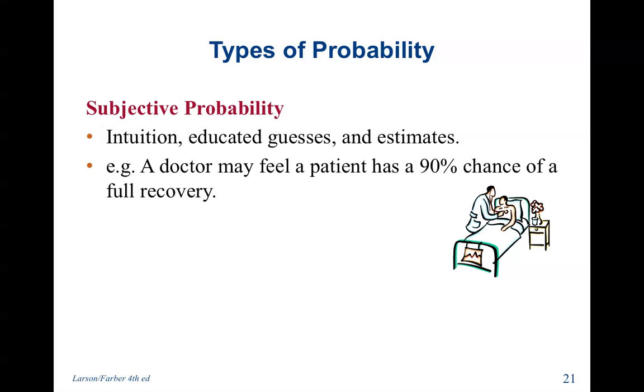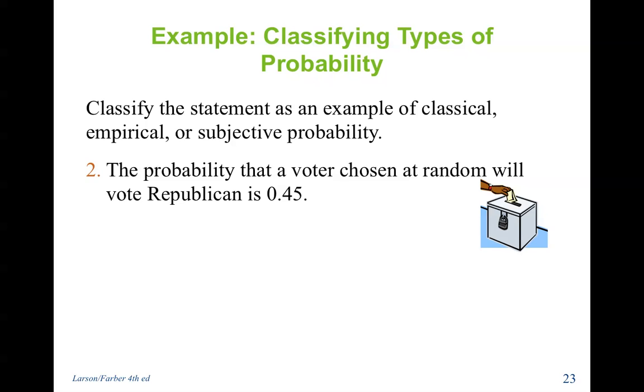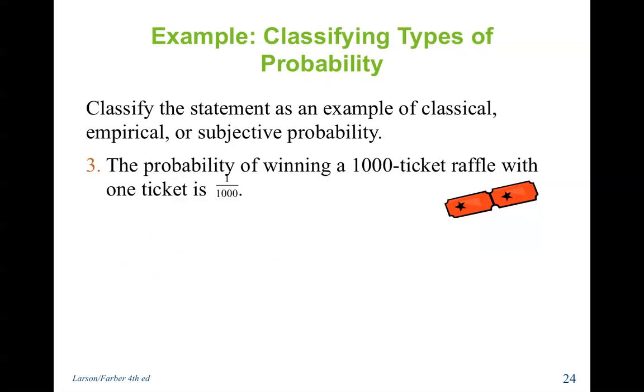Subjective probability. Intuition, educated guess, and estimates. A doctor may feel a patient has a 90% chance of full recovery. Classify the statement as an example of classical, empirical, or subjective probability. The probability that you will be married by age 30 is 50%. Subjective, most likely an educated guess. We can't really know for sure if you are going to be married by the age of 30 or not. We can't tell the future. Number two, the probability that a voter chosen at random will vote Republican is .45. Empirical, most likely based on a survey. Number three, the probability of winning an 1,000 ticket raffle with one ticket is 1 out of 1,000. Each ticket is equally likely to be pulled out of the bucket. So that is classical probability.